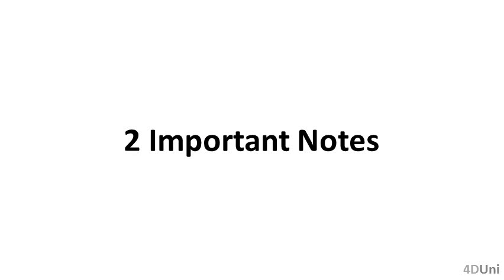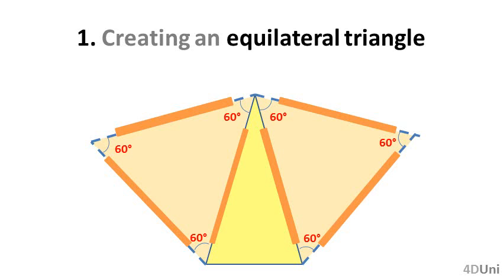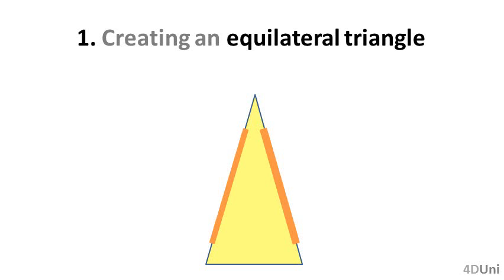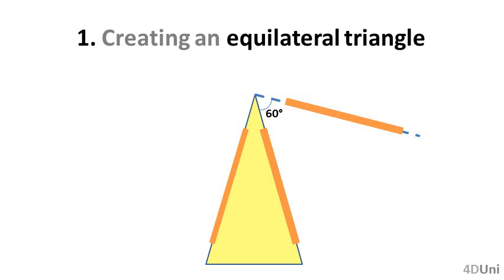Now, two important notes about creating isosceles and equilateral triangles when using auxiliary lines. One: if we try to create an equilateral triangle and there is an isosceles triangle in the problem, it is commonly convenient to create the equilateral triangle such that it has a common side with the isosceles triangle, with the common side being one of the equal length sides of the isosceles triangle. For instance, given an isosceles triangle which could be part of a problem, we could draw a straight line such that it forms a 60 degree angle as shown, then get a point in that line such that the segment has the same length as the two equal length sides of the existing isosceles triangle.